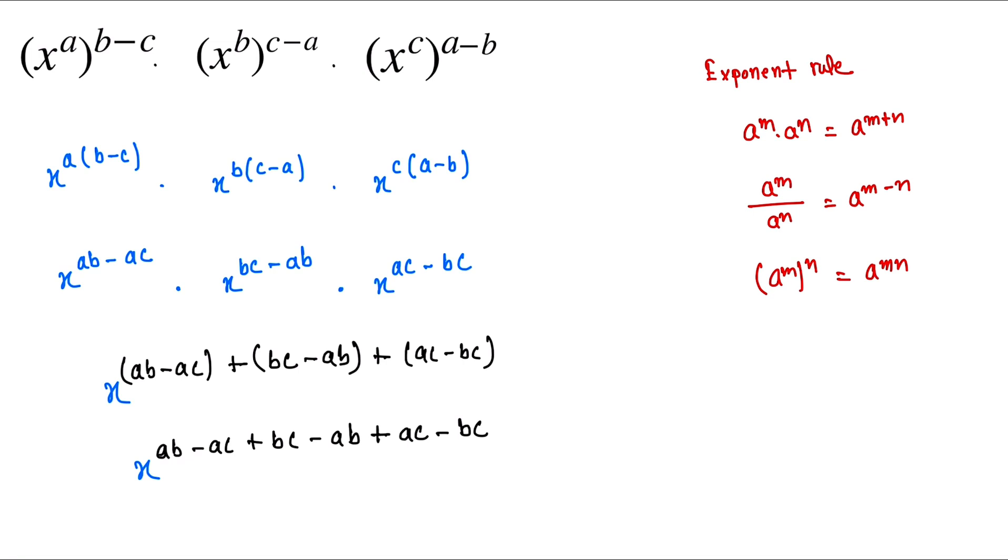Now here we look, ab and ab plus minus, bc and minus bc become cancelled. And here is minus ac and this becomes plus ac, so this one is cancelled. Now bc and minus bc, this one is cancelled. So here is x to the power 0.